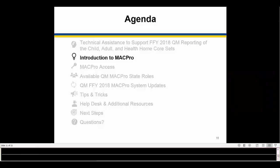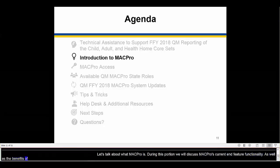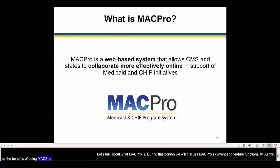So let's talk about what MACPro is. During this portion we will discuss MACPro's current and future functionality and features, as well as the benefits of using MACPro. MACPro is a web-based system that allows CMS and states to collaborate more effectively online in support of Medicaid and CHIP initiatives.